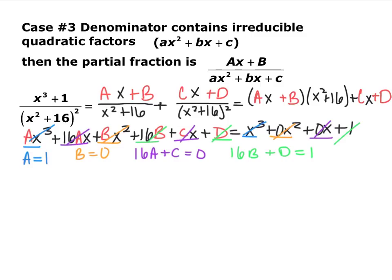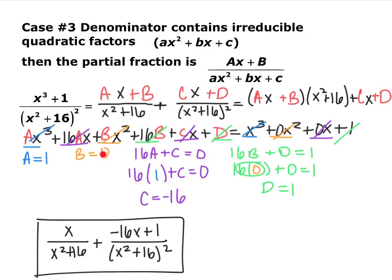Foiling out gives ax cubed plus 16ax plus bx squared plus 16b plus cx plus d, set equal to x cubed plus 0x squared plus 0x plus 1. For x cubed: a equals 1. For x squared: b equals 0. For x: 16a plus c equals 0, so c equals negative 16. For constants: 16b plus d equals 1, so d equals 1. The final answer is x over x squared plus 16, plus negative 16x plus 1 over x squared plus 16 quantity squared.